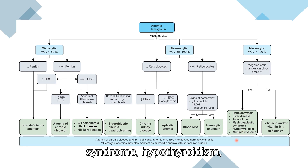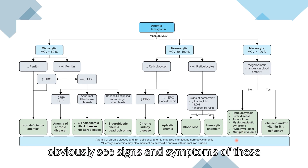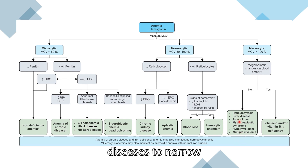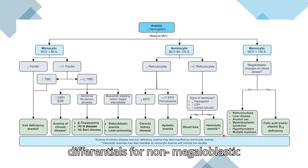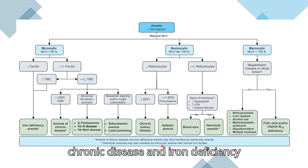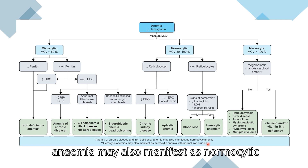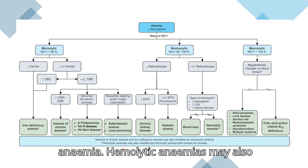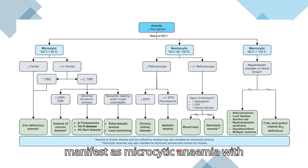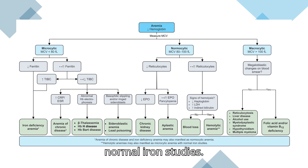Additional differentials for non-megaloblastic macrocytic anemia include hypothyroidism and multiple myeloma — you will obviously see signs and symptoms of these diseases to narrow the differential. Note that anemia of chronic disease and iron deficiency anemia may also manifest as normocytic anemia, and hemolytic anemia may also manifest as microcytic anemia with normal iron studies.